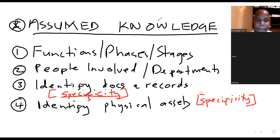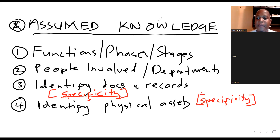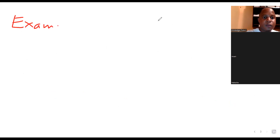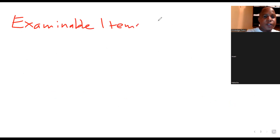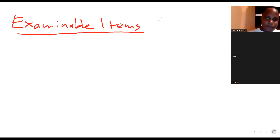A system description is simply a fancy name for a case study scenario. When they say 'give audit procedures from the given system description,' they're simply saying 'give audit procedures from the above-mentioned case study.' So be familiar with those things. When it comes to physical assets, we identify them based on what's given in the case study scenario — there is a need for specificity and clarity.